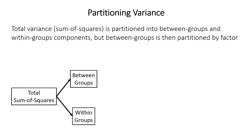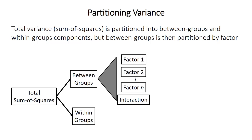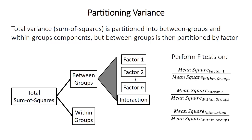The process is similar to one-way ANOVA. Total variability is first partitioned into the between groups component — measuring differences between group means — and the within groups component, measuring scatter within groups. Because there are multiple independent variable factors, the between groups variance is further partitioned into the sum of squares for each factor as well as the interactions. Statistical significance is then assessed using F-tests on the ratio of the between groups mean square for each factor relative to the within groups mean square, yielding an F-test for each factor and each interaction.